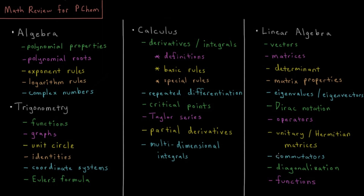Commutators, diagonalizing, and how to turn matrices into functions are more advanced topics for the advanced sections of this channel. But definitely everything in the first three topic areas — algebra, trigonometry, and calculus — is going to be pretty vital for success in thermodynamics, quantum mechanics, statistical mechanics, spectroscopy, and any of the topics you'll study as an undergraduate physical chemistry student.